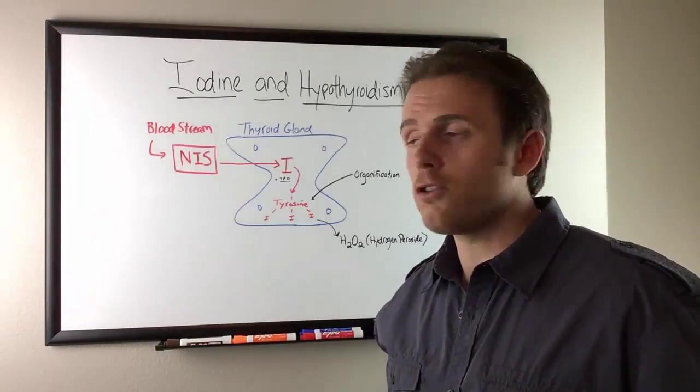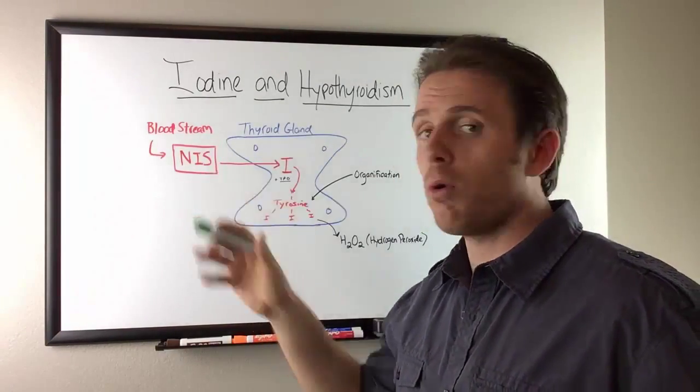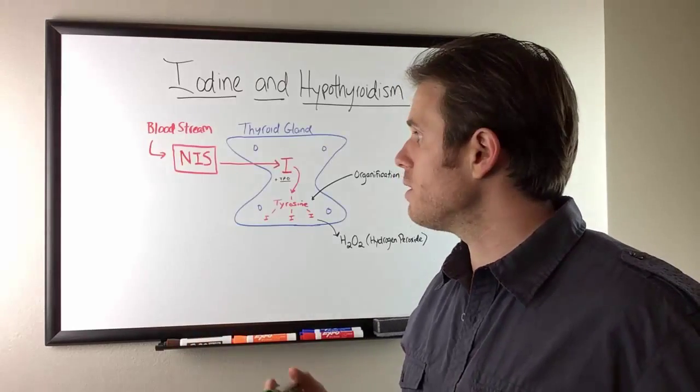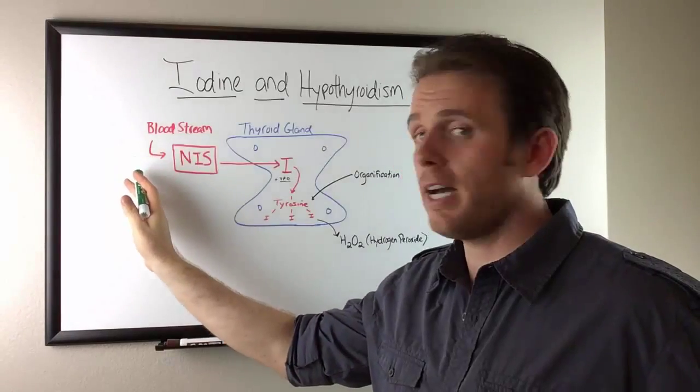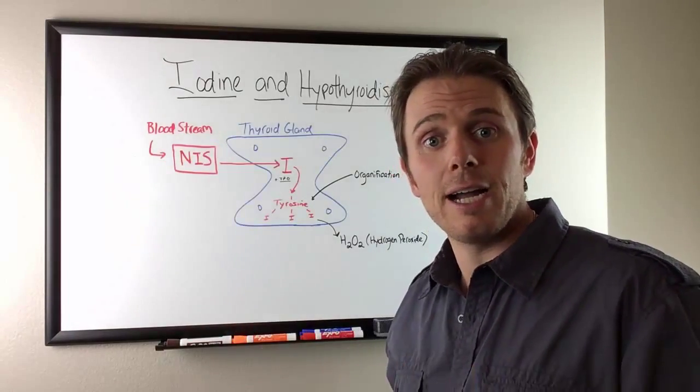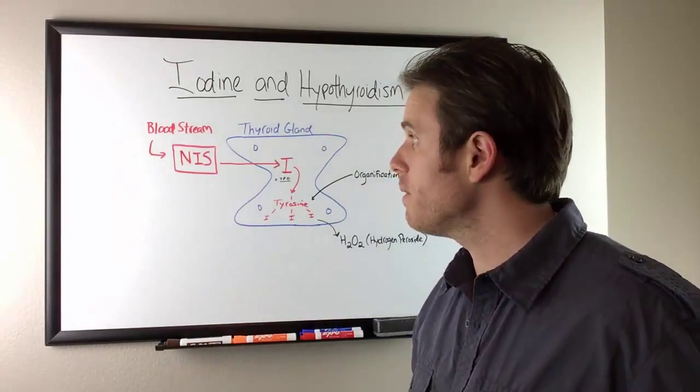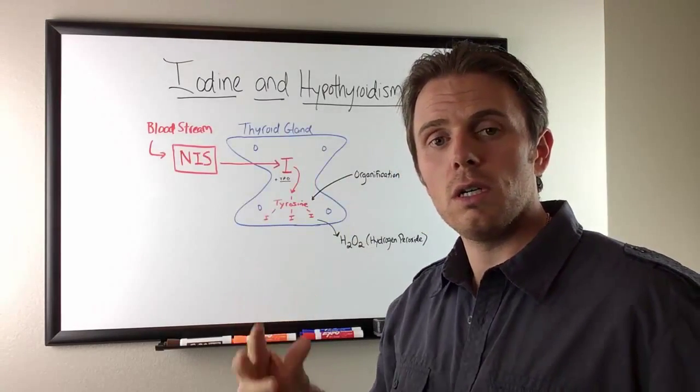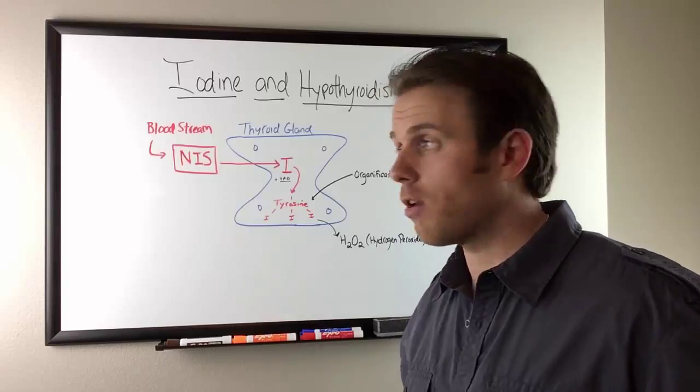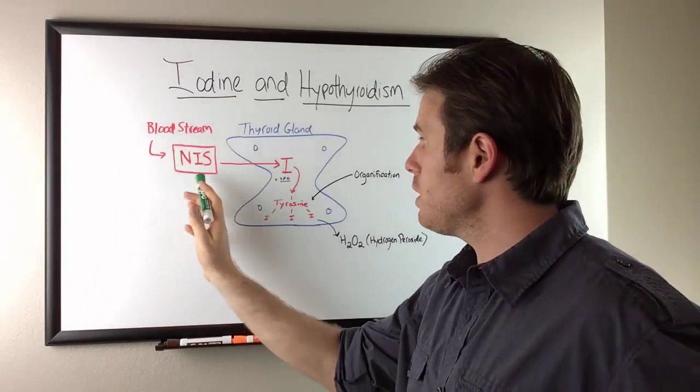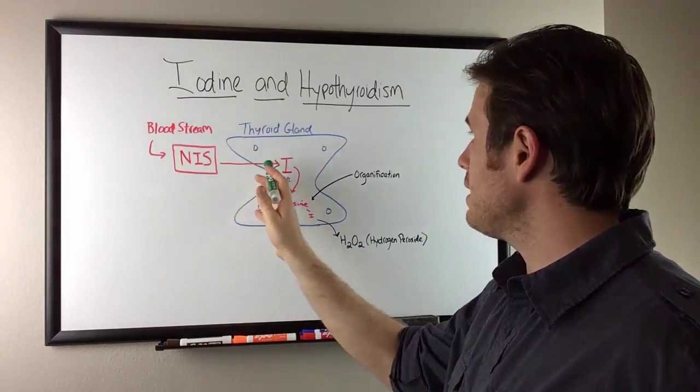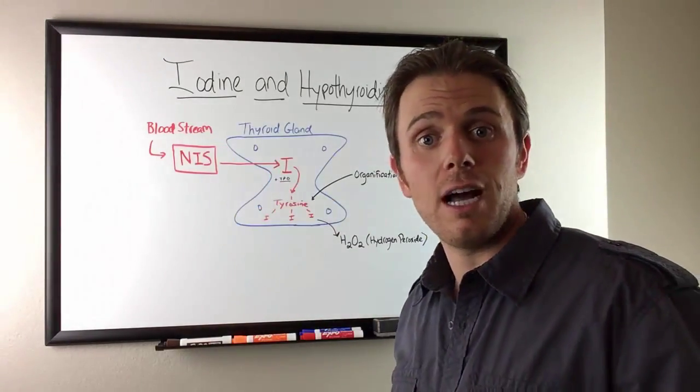We have this system called the sodium iodine transporter system, the sodium iodine symporter system. The role of this is to help take and bring iodine or iodide because iodide is primarily used by the thyroid. What happens is iodine is reduced into iodide, pulling an electron away, and this sodium iodine symporter takes iodine in the blood, brings it into the thyroid gland where it's converted to iodide.